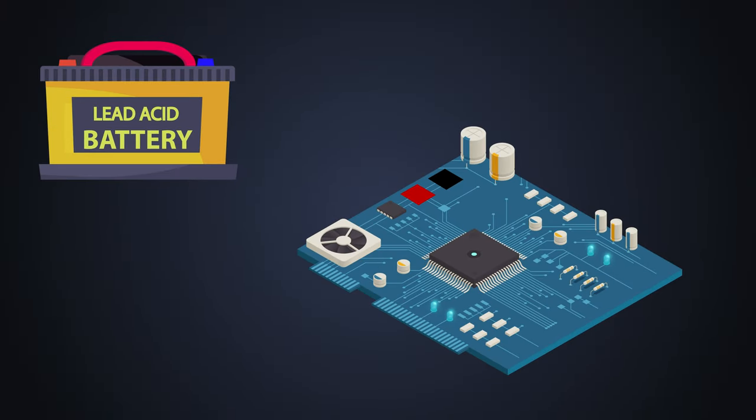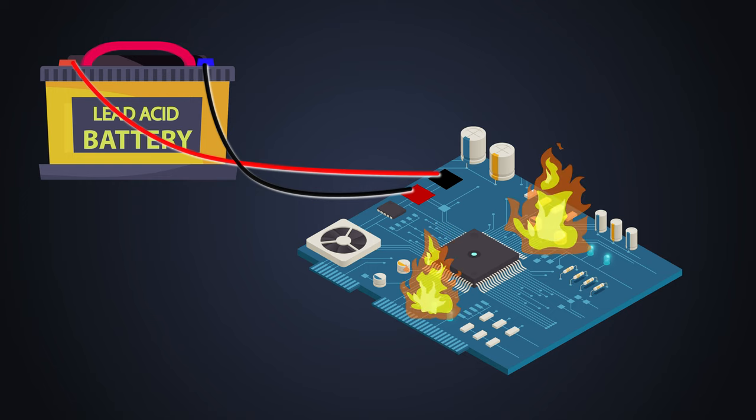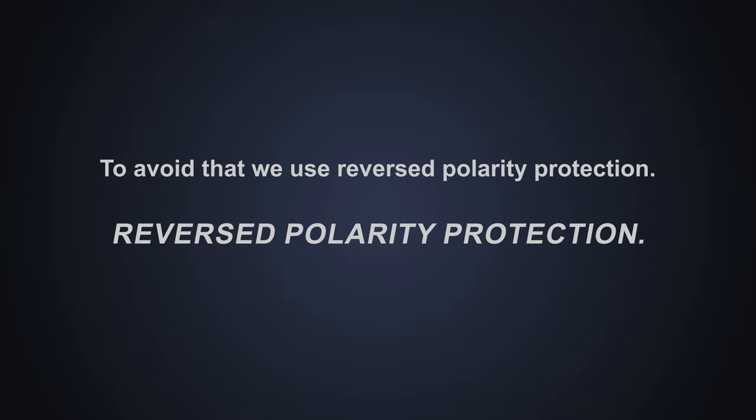Let's say during maintenance where the battery positive and negative leads may be connected in the opposite polarity. Due to that, the internal circuit of the system might damage or there will be a short circuit between battery positive and negative terminals. To avoid that, we use reverse polarity protection.